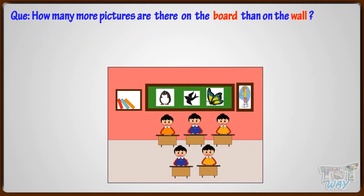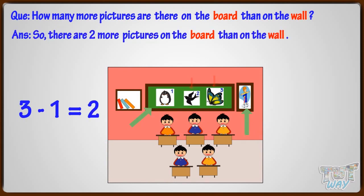How many more pictures are there on the board than on the wall? Let's find it out. There are three pictures on the board and only one picture on the wall. Three minus one equals two. So there are two more pictures on the board than on the wall.